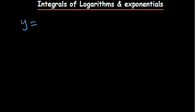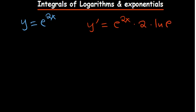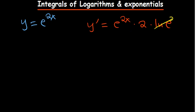When you look at y = e^(2x), to differentiate that, what we do is: maintain what we have, then multiply by the derivative of the power — which is 2 — and then the natural log of the base. Of course, for an exponential with base e, the natural log of e is 1, so it becomes simply 2e^(2x).